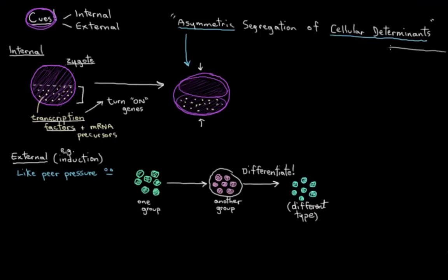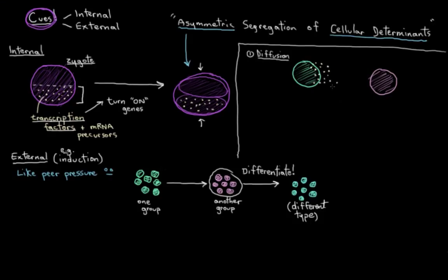And the signals could be passed a few different ways. So they could be passed by diffusion. They could be released from one group and just diffuse over to the other group where they'll bind receptors on the other groups and cause the cells over there to differentiate.